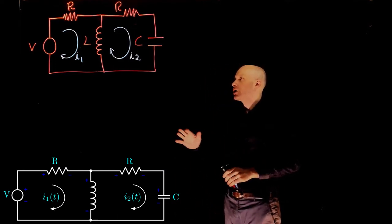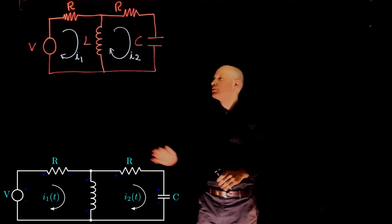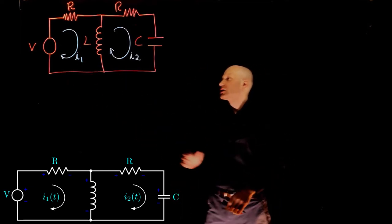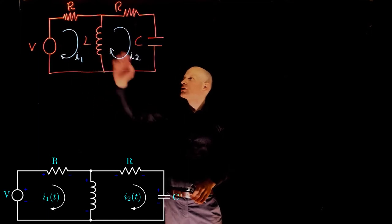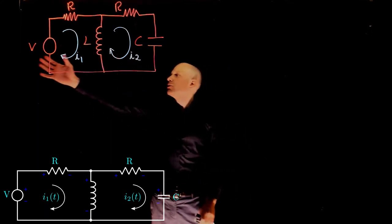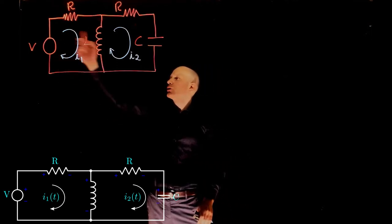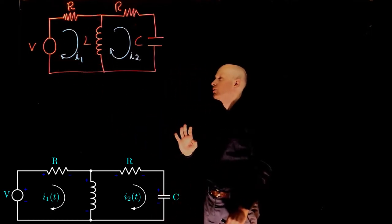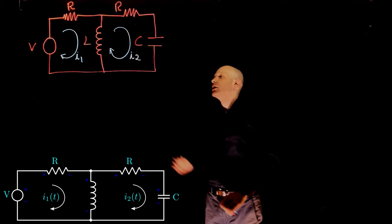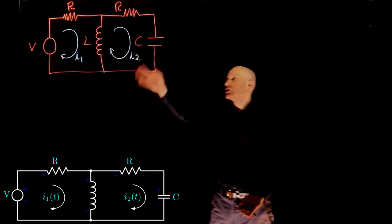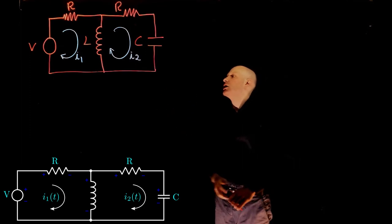We can now apply Kirchhoff's law to each of these loops. Start with the first one. We know that the sum of all voltage drops across this circuit equals the input voltage to the system, or the sum of all voltages across this loop equals to zero. It's the same statement. And same goes for the second loop. The sum of all voltages in this closed circuit must be zero.